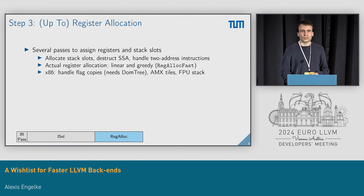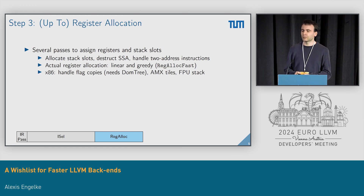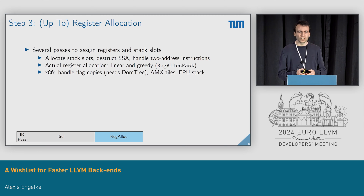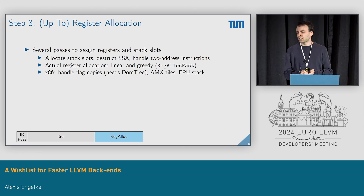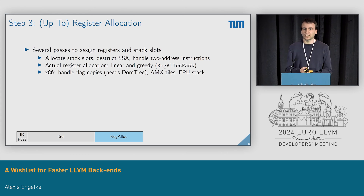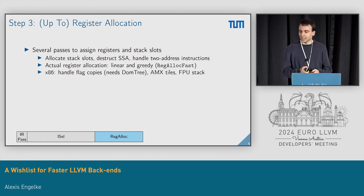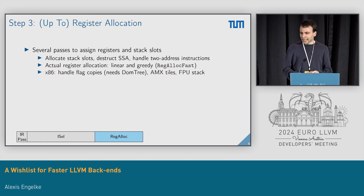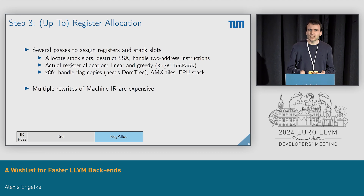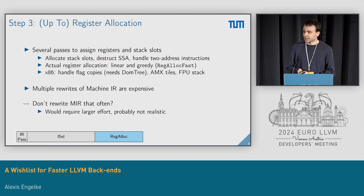The next big chunk after instruction selection is register allocation, which is in fact several passes. First, we allocate stack slots when we destruct SSA by replacing phi nodes with copy operations. Then we handle instructions that clobber one of their sources, and then we do the actual register allocation. For x86, we also need to handle flag copies — the only user of a dominator tree in the O0 pipeline, which is not cheap to compute — plus things almost nobody uses like AMX tiles or the FPU stack. These multiple rewrites of the IR are expensive. We could try to rewrite machine IR less often, but this would require a larger effort and is probably not realistic anytime soon.